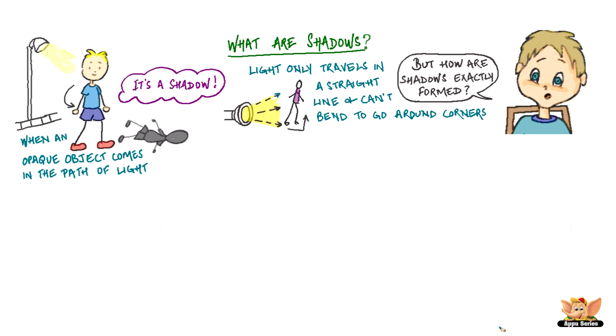So when an opaque object, which doesn't allow light to pass through it, comes in the path of light, a shadow is formed behind it.